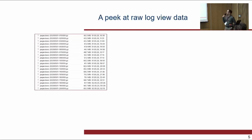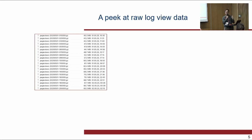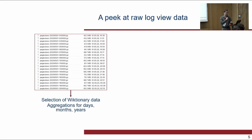Let's have a peek at the raw log view data. This is what it looks like when you access the Wikimedia Foundation — they call them data dumps. Each gzipped file holds information for one hour of views, and these files are pretty large because all Wikimedia projects' views are in there. So we have to extract the data for the English dictionary and delete Wikipedia, Wikiquote, Wikidata, and other projects. Then we aggregate for days, months, years, or the whole period, because hourly data is really bulky.